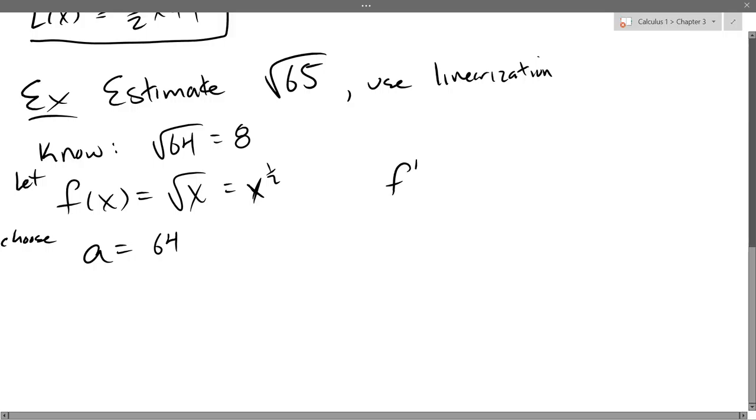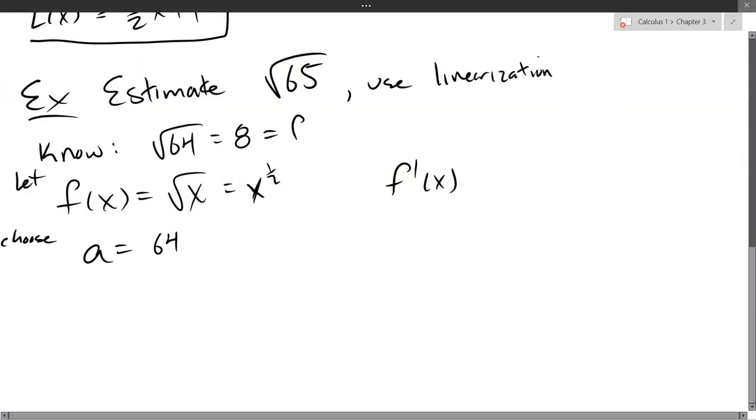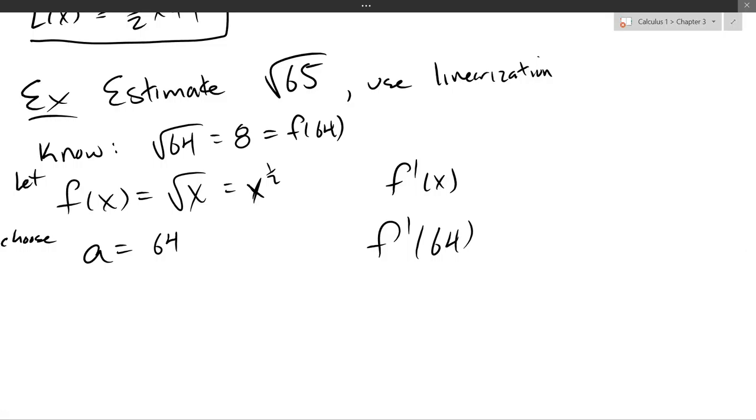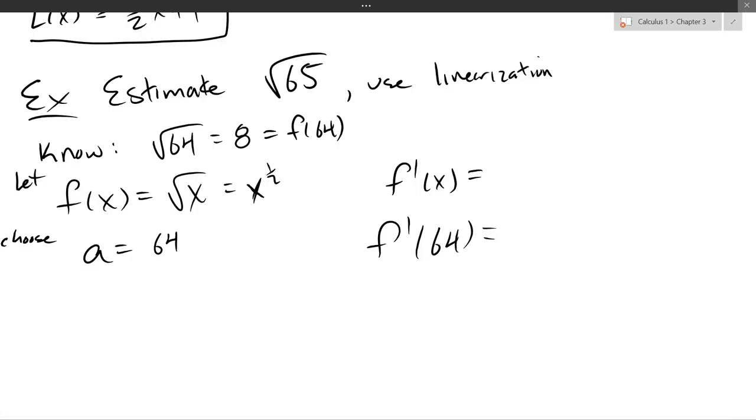So to linearize, I need the derivative. I already have eight is F of 64. So I already have F of 64. So I need the derivative, and then I need F prime of 64. So go ahead, get the derivative, and then plug in 64. See what you get. Theoretically, you should get a relatively nice number back out. And I say relatively, it won't be an integer, but it shouldn't have some crazy square root that you don't know about.